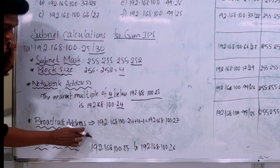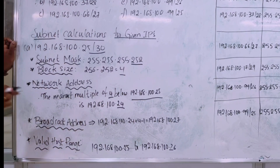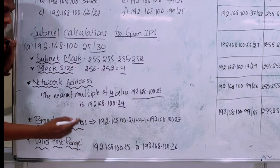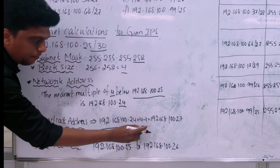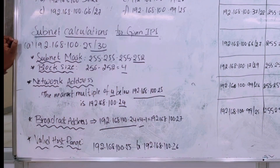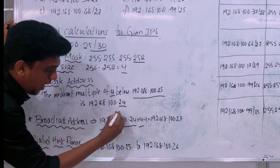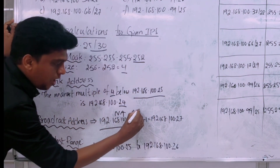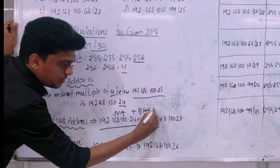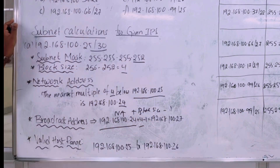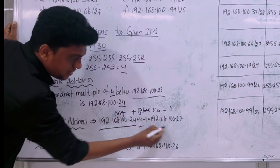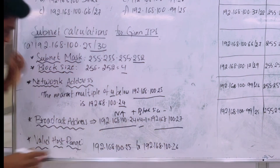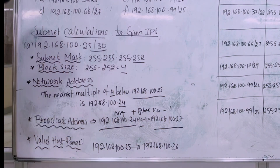The broadcast address is found by: network address plus block size minus one. So it is 24 plus 4 minus 1, which equals 27. Therefore, 192.168.100.27 is the broadcast address.